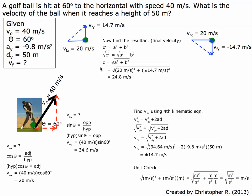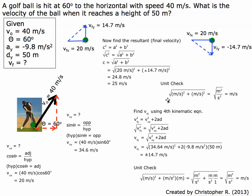We end up with 24.8 meters per second, so the final velocity is 24.8 meters per second at a height of 50 meters. We have 2 significant figures, so our final answer has 2 sig figs. Unit check: meters per second squared plus meters per second squared gives meters squared over second squared, and taking the square root gives meters per second — which is what we have.